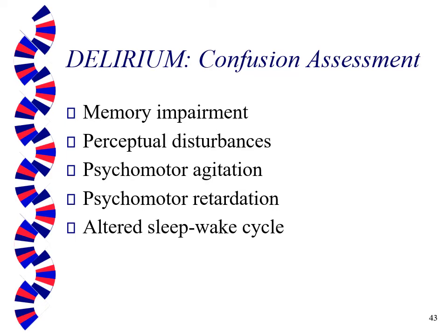Psychomotor agitation: the patient will be agitated, restless, with poor balance and a very unsteady gait. There will be no normal sleep-wake cycle. They need to be on a one-to-one. This is so serious that if they're not on a one-to-one and they get injured, it can result in a complaint against your nursing license. It's a standard of care that someone with full-blown delirium in the hospital needs one-to-one monitoring.